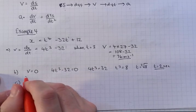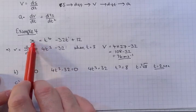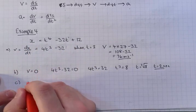C, the acceleration of P when t equals 1.5. So we've got displacement. We differentiate to get velocity. You differentiate it again to get acceleration.